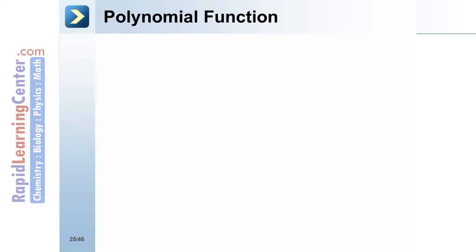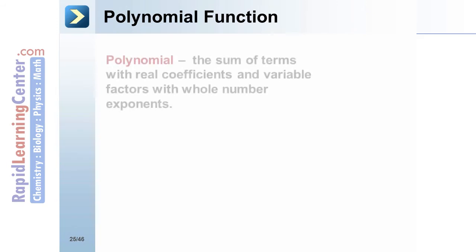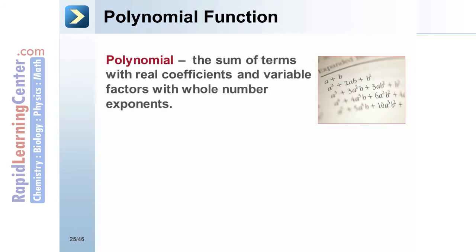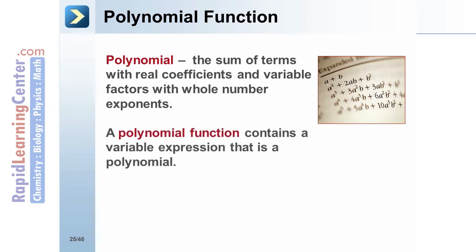Polynomial Function: A polynomial is the sum of terms made up of numbers, variables, and whole number exponents. A polynomial function contains a variable expression that is a polynomial. An example would be y equals 3x to the fifth minus 2x to the fourth plus 4x.